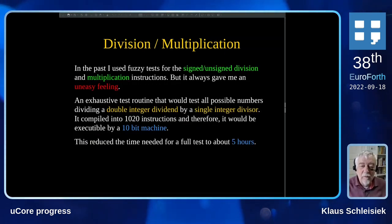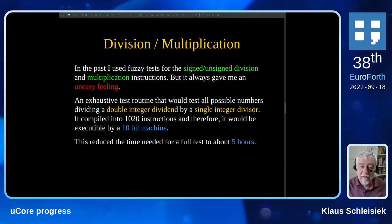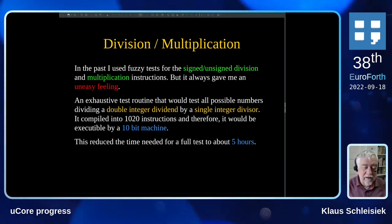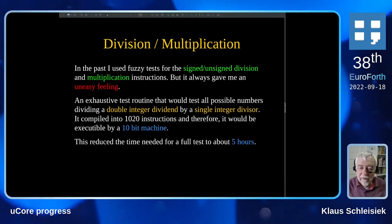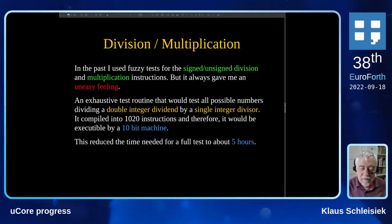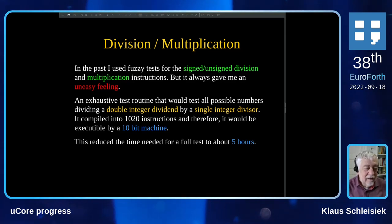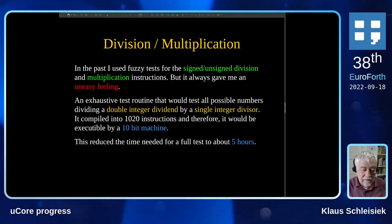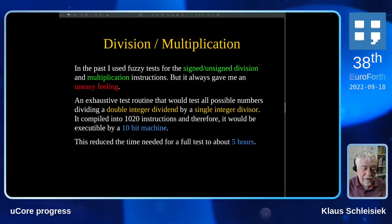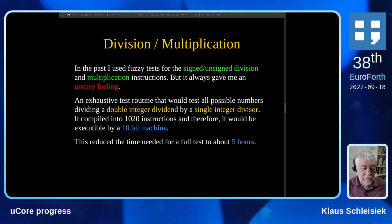While working on the internals after byte addressing, I had to revisit all my test suites written before, because they also needed to handle the byte cases. I finally stumbled across my test routines for signed/unsigned division and multiplication. In the past I used a fuzzy approach, which always left me with an uneasy feeling because I didn't test every case. So I wrote an exhaustive test routine that would test all possible numbers dividing a double-integer dividend by a single-integer divisor.